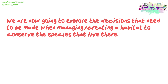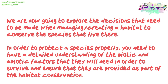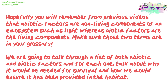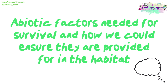We are now going to explore the decisions that need to be made when managing or creating a habitat to conserve the species that live there. In order to protect a species properly, you need to have a detailed understanding of the biotic and abiotic factors that they will need in order to survive and ensure they are provided as part of the habitat conservation. Abiotic factors are non-living components of an ecosystem such as light, whereas biotic factors are the living components. Make sure those two terms are in your glossary. We are going to talk through a list of both abiotic and biotic factors and for each one discuss why it would be needed for survival and how we can ensure it has been provided in the habitat.